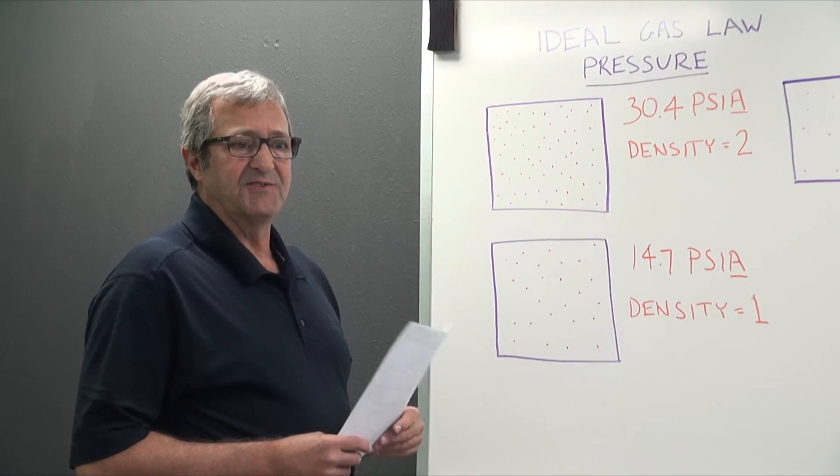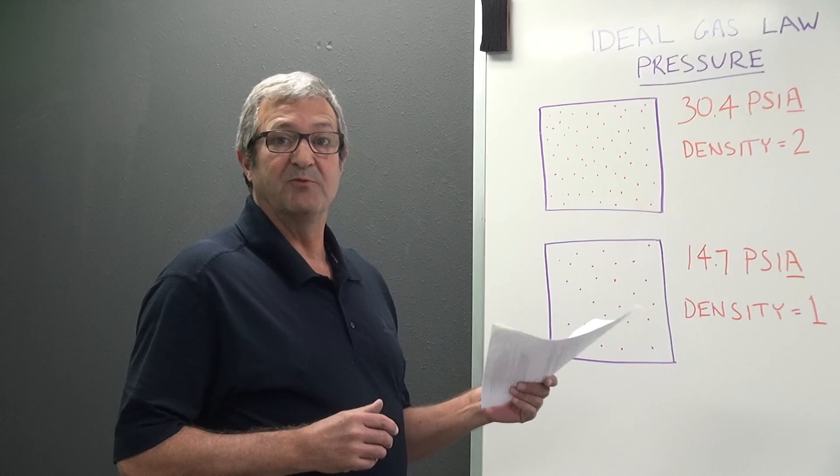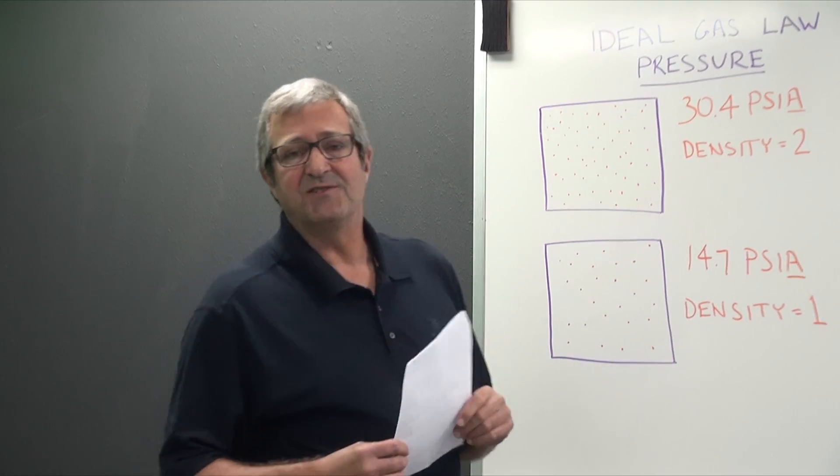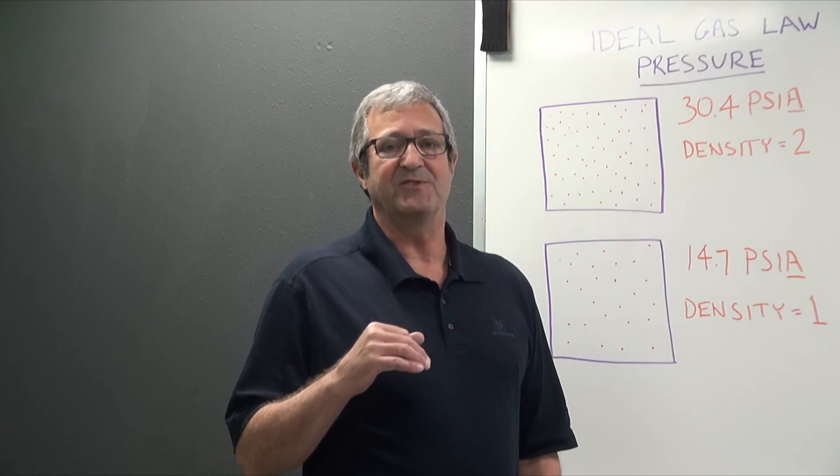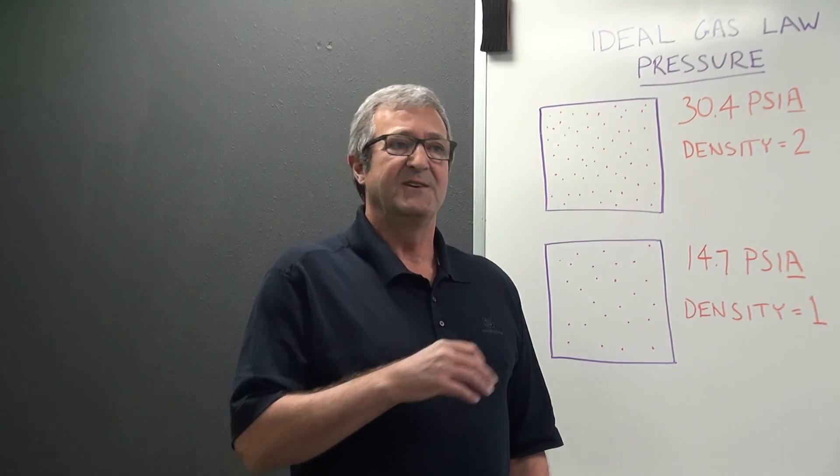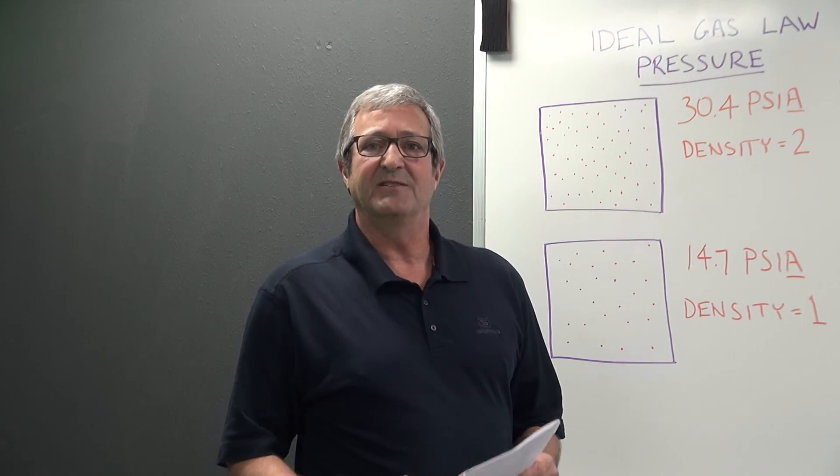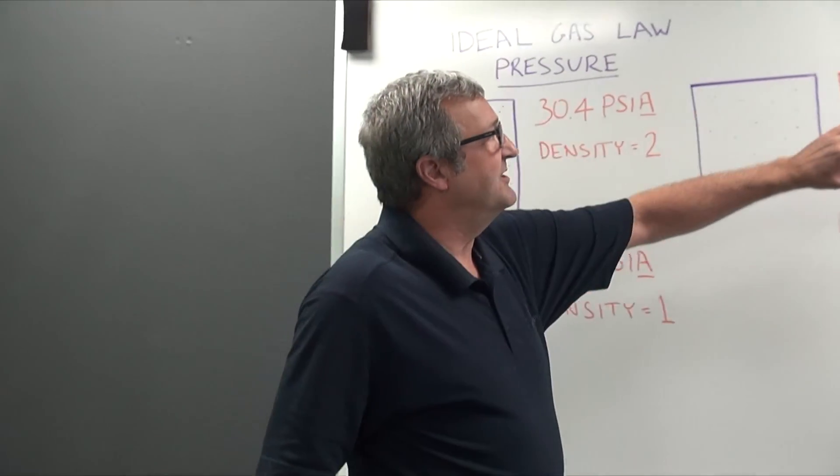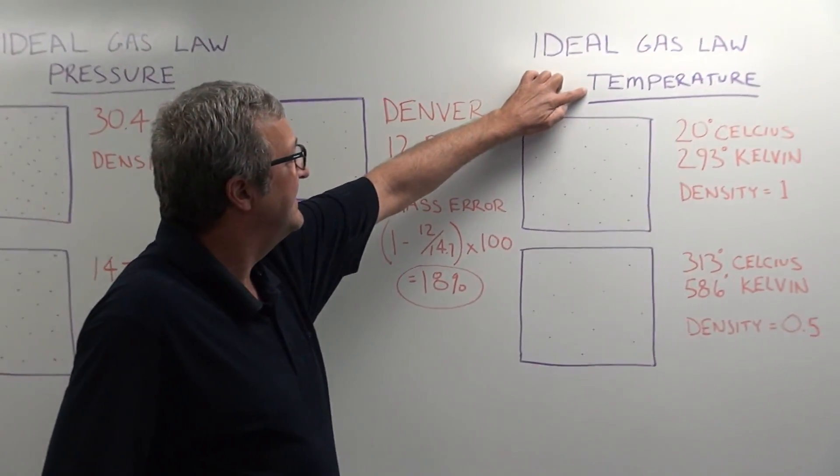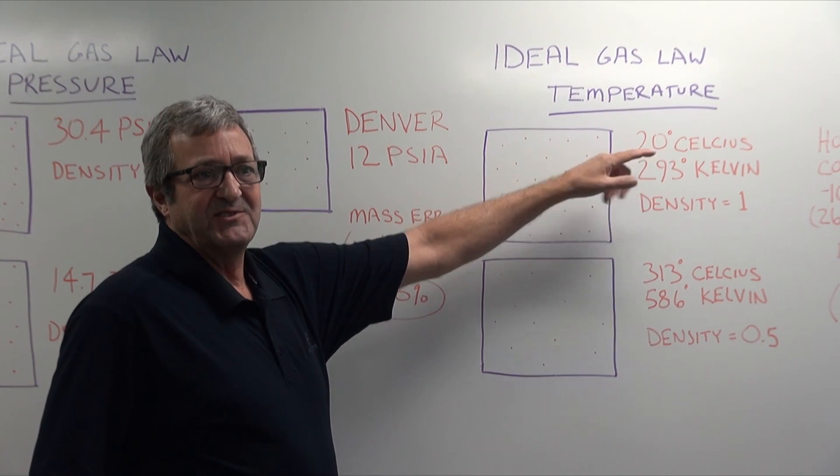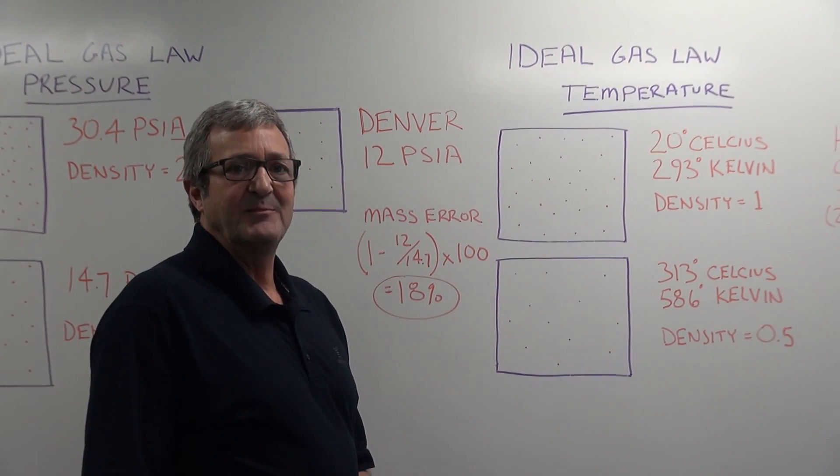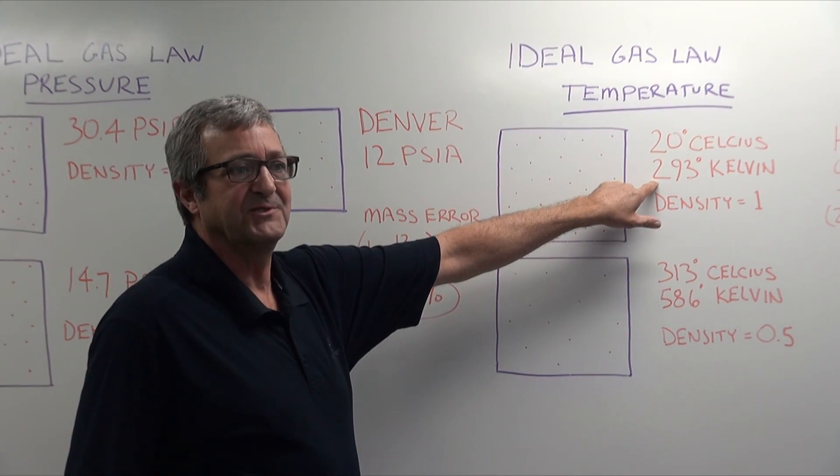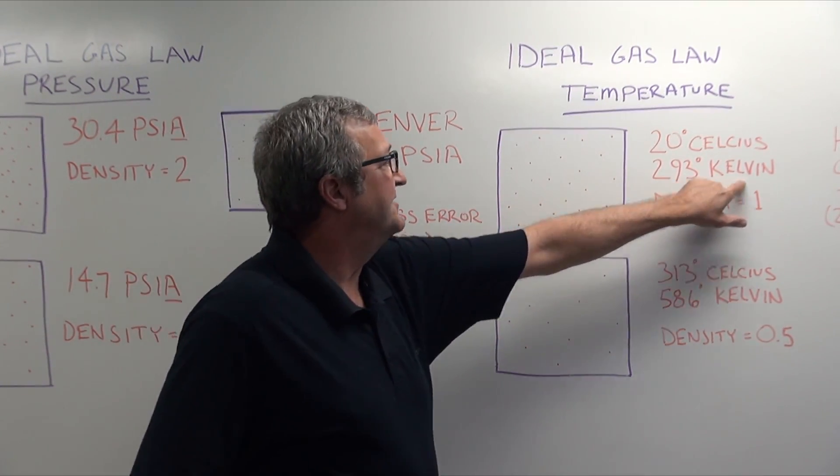The ideal gas law is also not just based on pressure, it's also based on temperature. The same basic recommendations go along with it, that is that the temperature needs to be measured at absolute temperature. So let's just spend a minute talking about temperature effects the way that we just finished talking about pressure effects. So now we're over here on the ideal gas law as it refers to temperature. 20 degrees Celsius is considered to be a normal ambient temperature like we're standing in right now, only that has to be converted to an absolute temperature as well, which in this case would be degrees Kelvin.